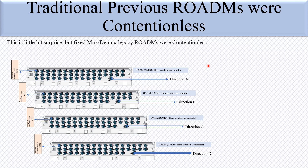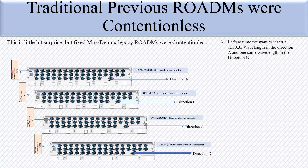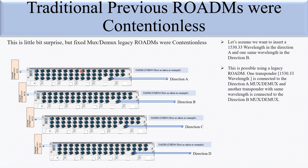Let's assume we want to insert a 1533 nm wavelength in direction A and the same wavelength in direction B. You can see this wavelength is added for direction A, the same wavelength is added for direction B, direction C, and direction D. These wavelengths are all the same and they are all being added or dropped for different directions. That is why previous ROADMs were contentionless, because it fulfills the condition of contentionless.